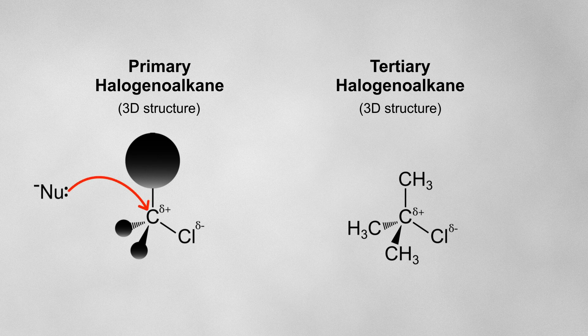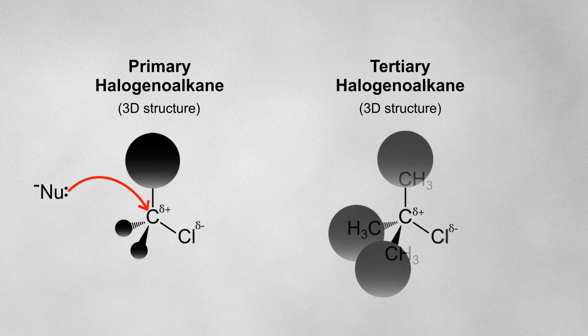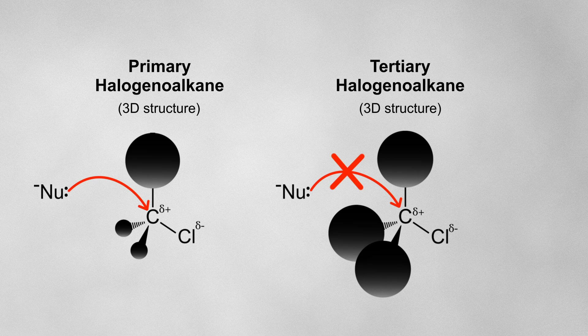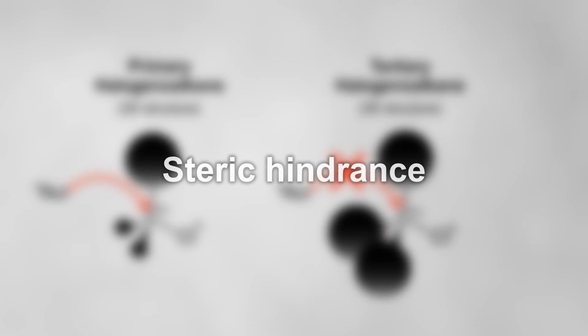In the tertiary halogeno alkane, the delta plus carbon atom is bonded to three bulky alkyl groups. These alkyl groups take up a lot of space and get in the way of incoming nucleophiles, preventing them from reaching the delta plus carbon. This phenomenon, whereby bulky groups reduce the likelihood of a reaction, is called steric hindrance.